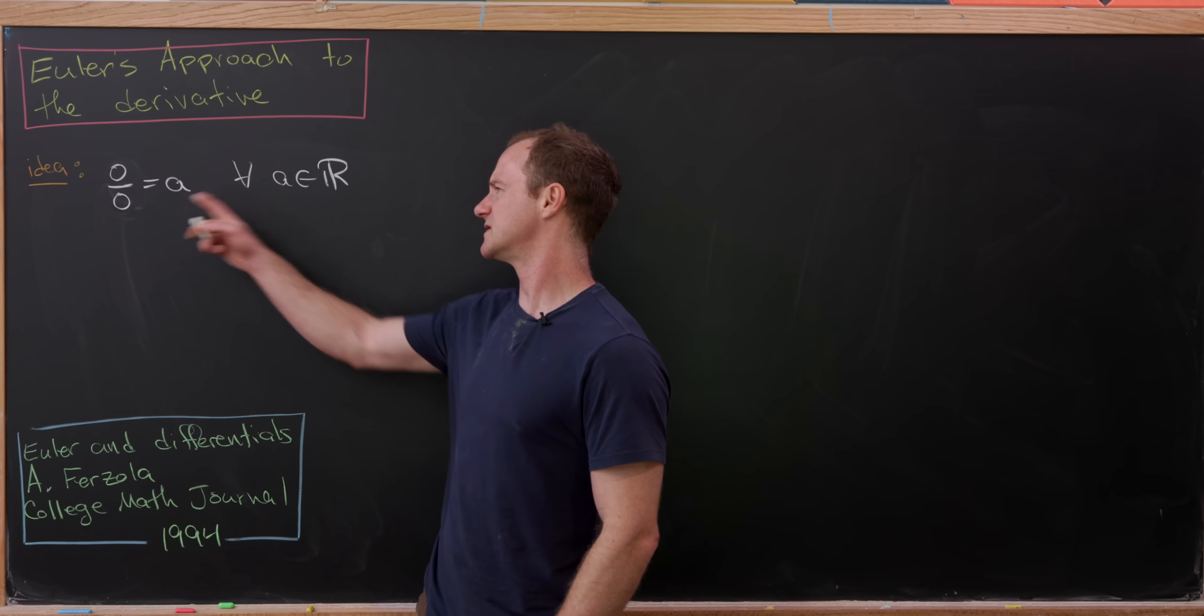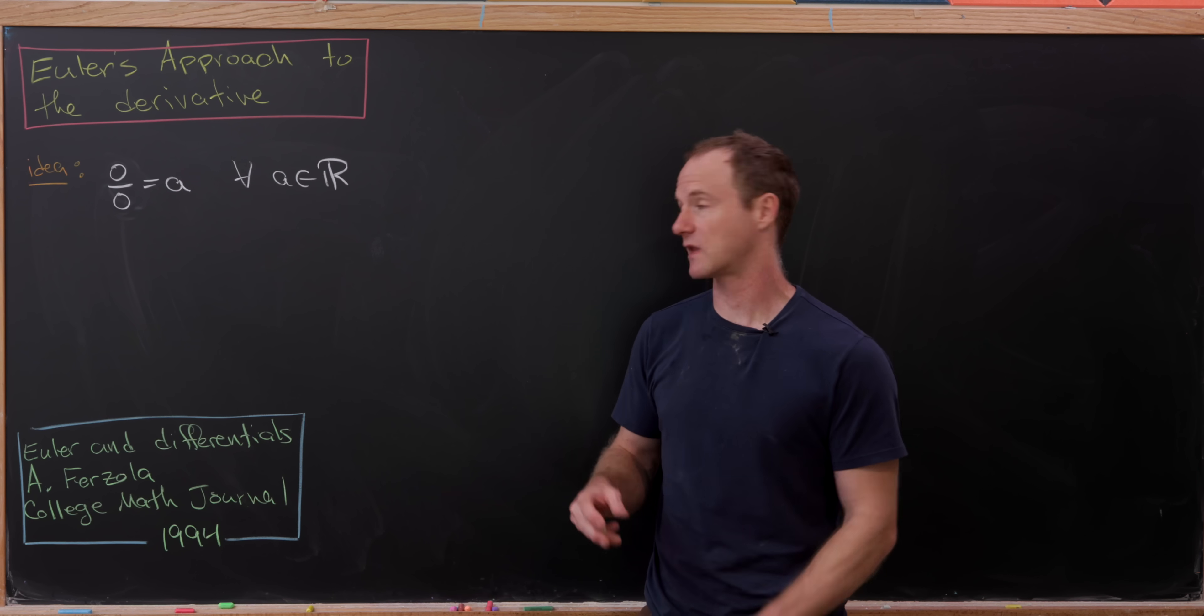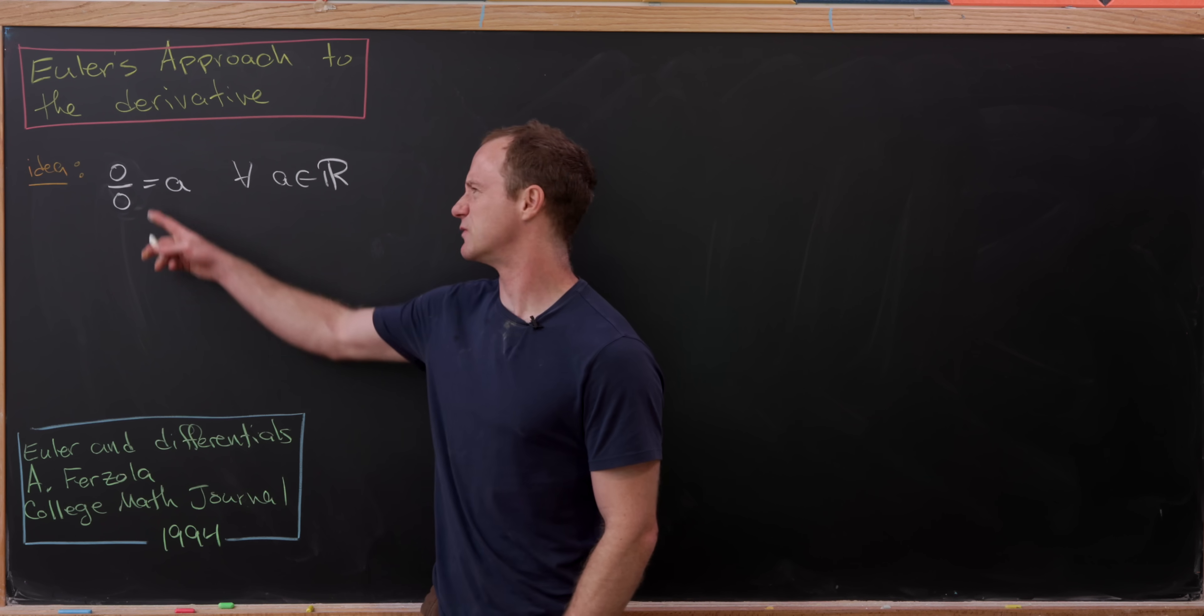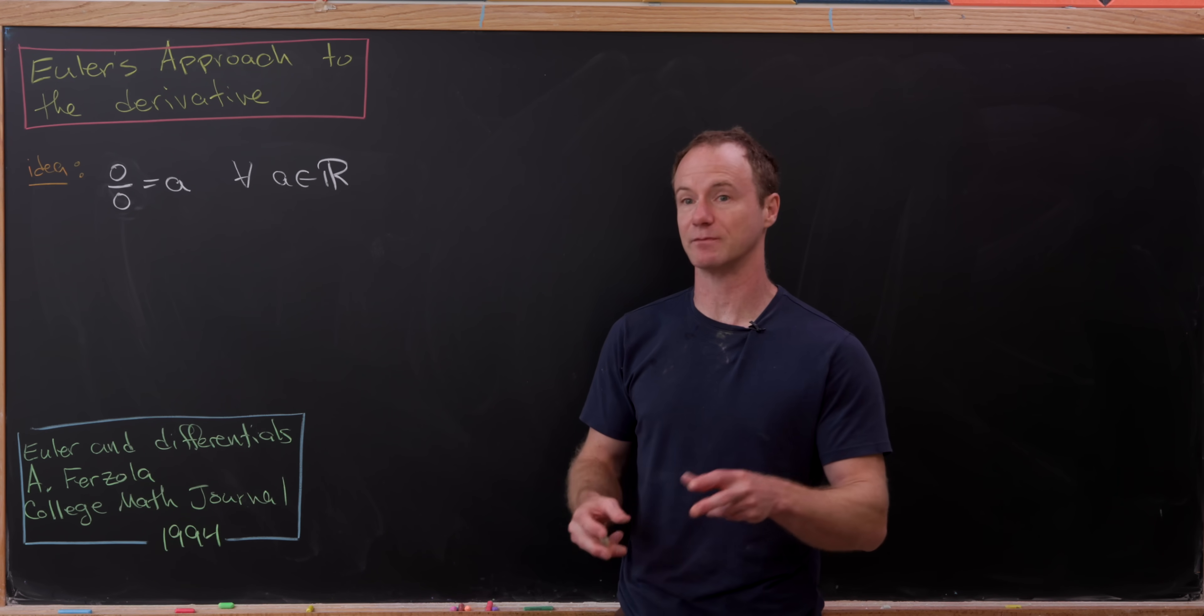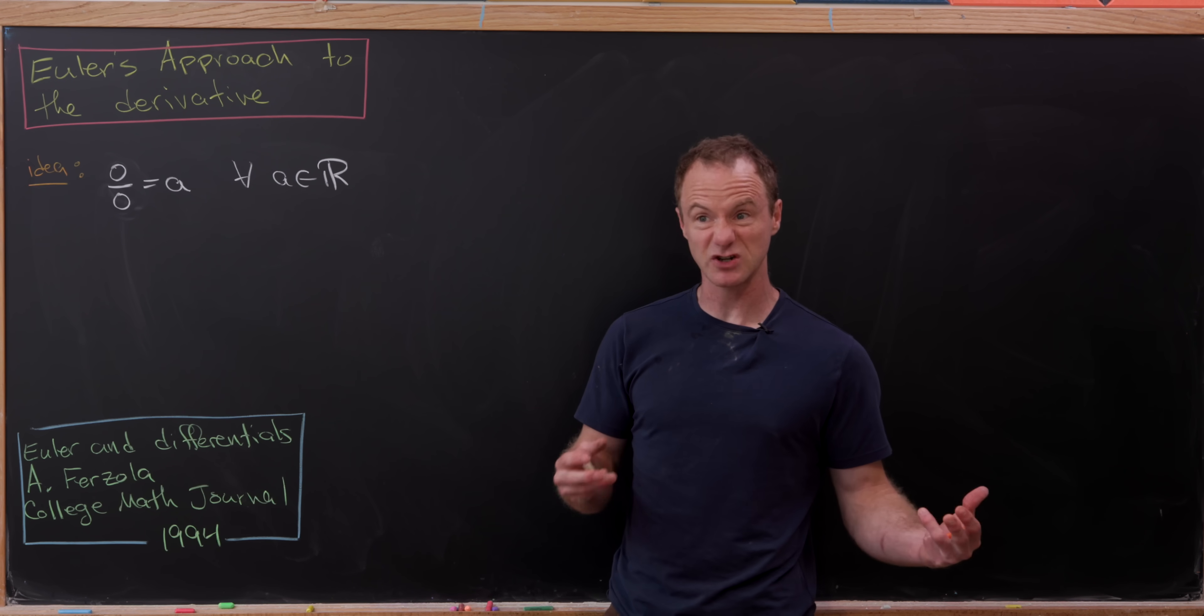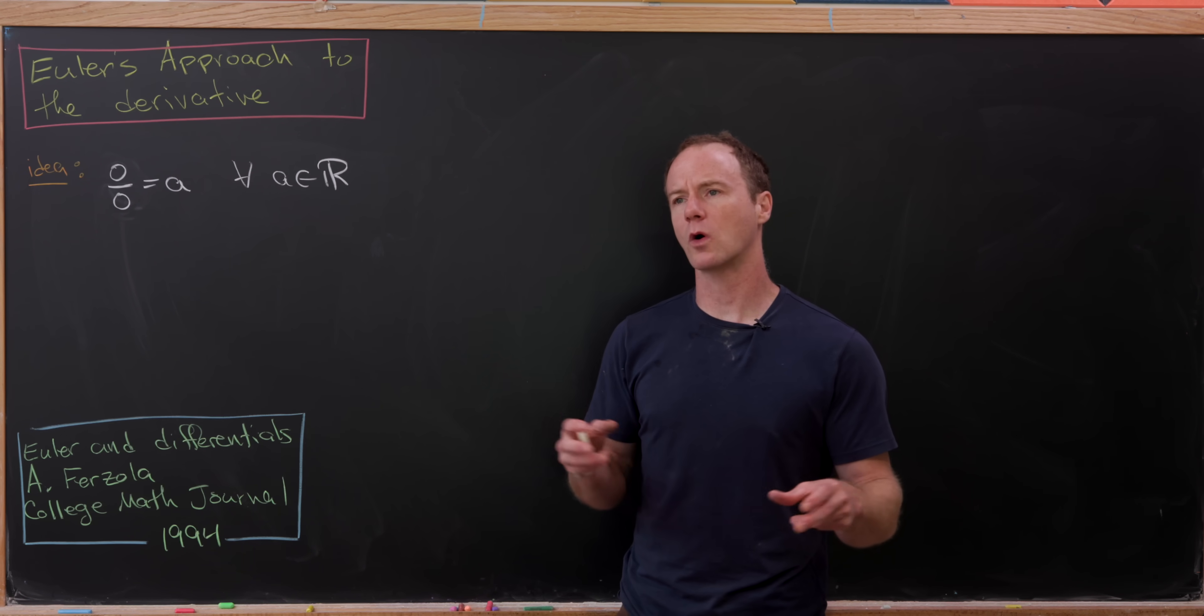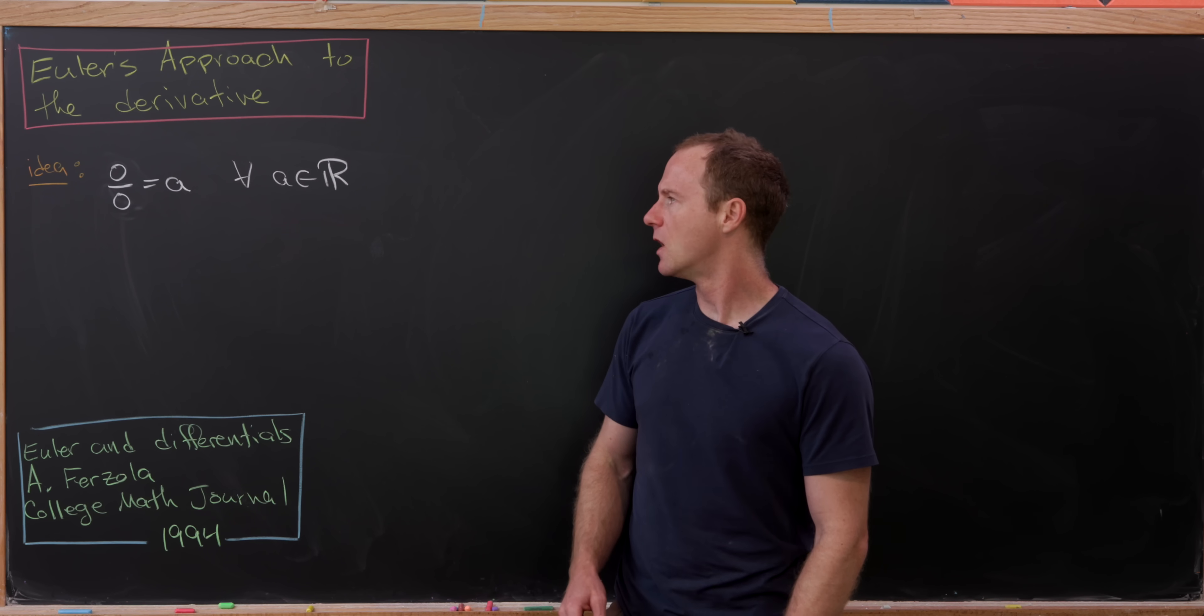Of course, this doesn't make any sense in normal or modern language. We would approach this kind of thing with limits. Anytime you would see a zero over zero, you would think that there's probably some sort of limiting procedure behind that. Perhaps we've got a quotient of functions, and we're taking a limit, and both functions go off to zero, or a quotient of sequences, or something like this.